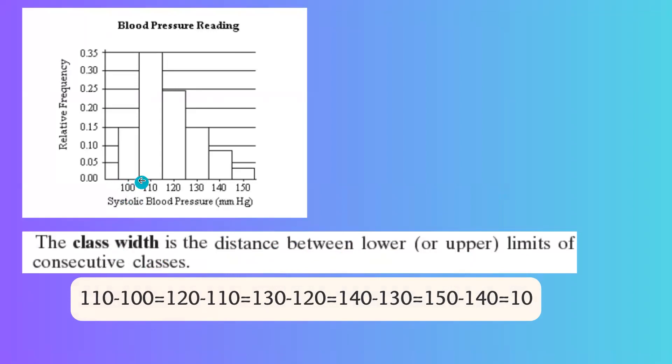But note that we don't have the actual value for the lower or upper classes here. What we have instead are the representatives, which are the midpoints. So basically, you can just find the difference between the midpoints, and that is your class width.